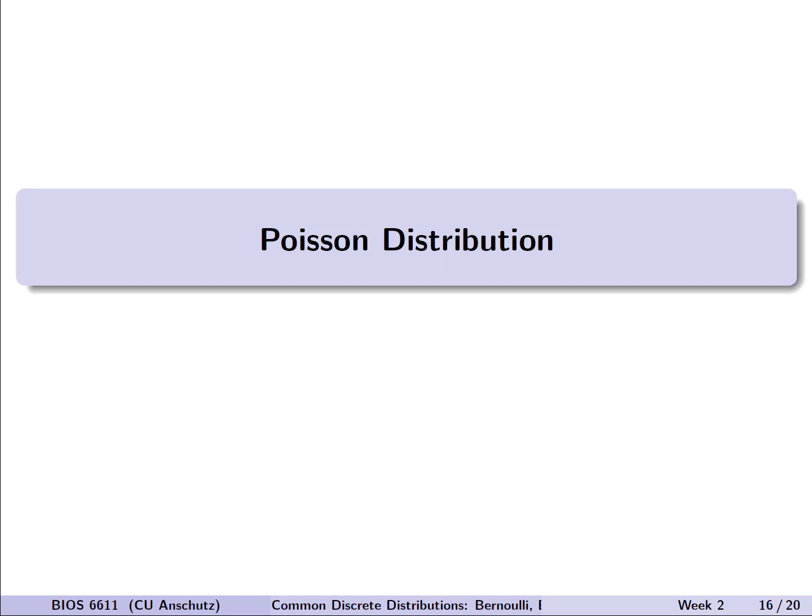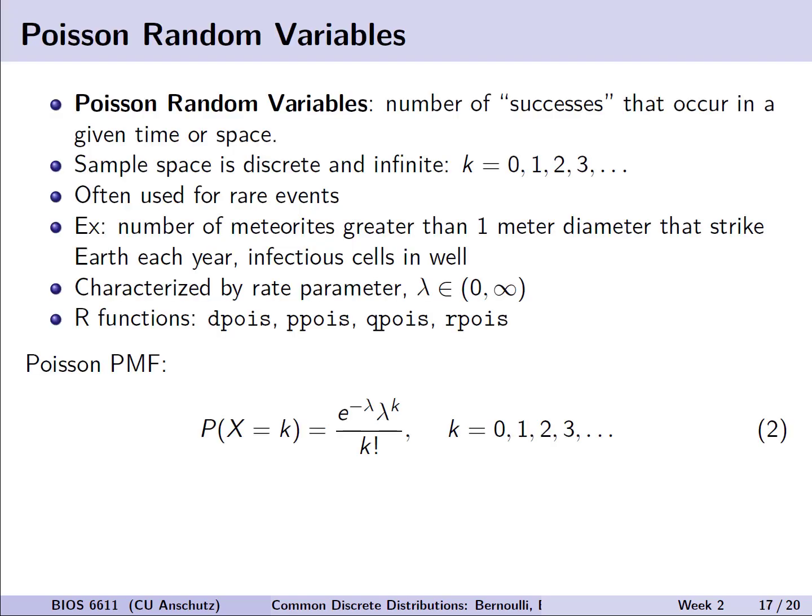With that, let's pivot to look at the Poisson distribution as our final named distribution of interest. A Poisson random variable represents the number of successes that occur in a given time or space. For a distribution or random variable that is Poisson distributed, we see the sample space is going to be discrete with a possibility for infinite outcomes.